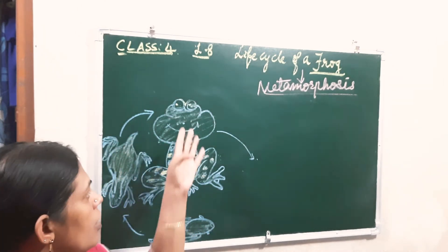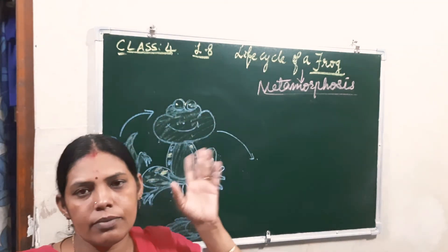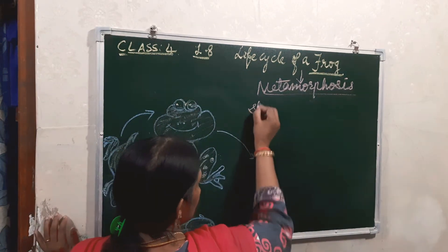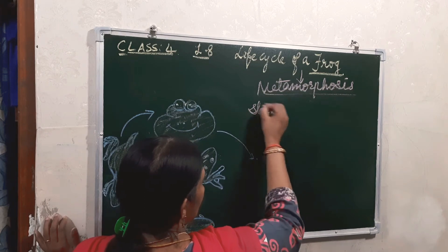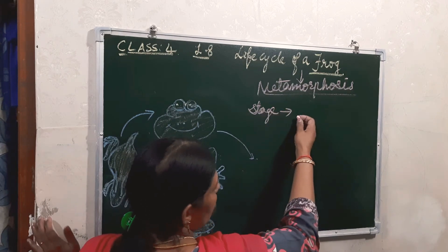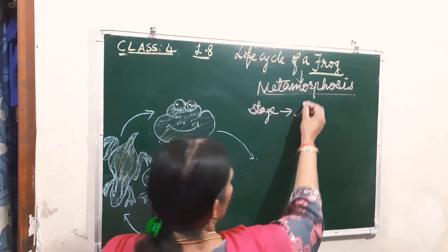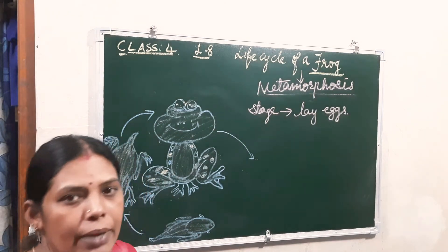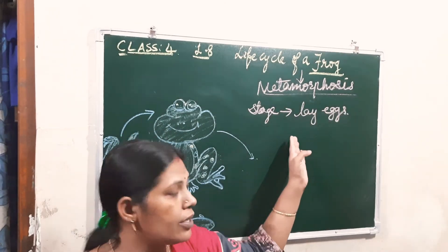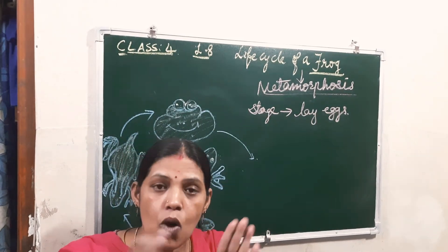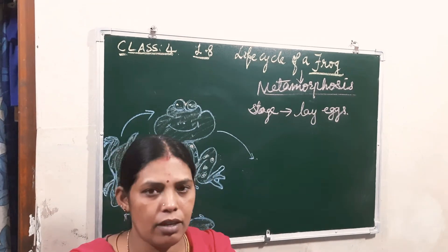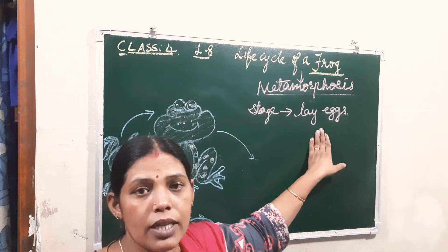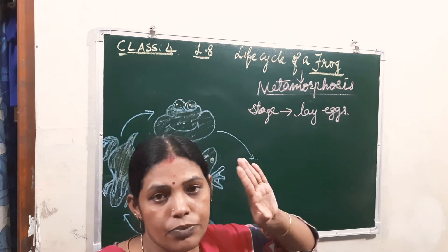Now, in the life cycle of the frog, the first stage — stage one — is that the adult frog lays eggs. This frog is an amphibian. Amphibian means they can live both on land as well as in water. But for laying the eggs, they go to the water only.